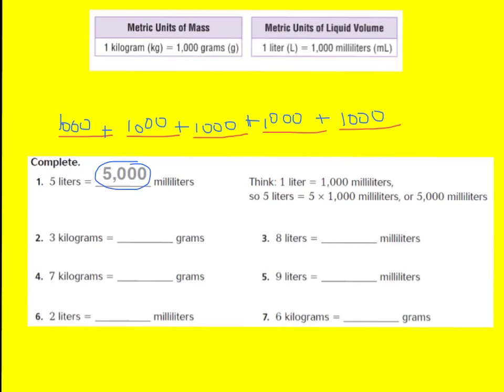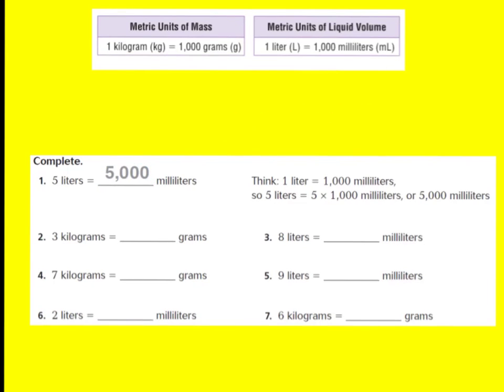So let's look at question two. Three kilograms equals how many grams? So I'm going to go ahead and draw three lines. Each line will represent one kilogram. And I'm going to put on each line the value of how many grams are in a kilogram. One kilogram has 1,000 grams, another kilogram has 1,000 grams, and a third kilogram has 1,000 grams. And so if I were to add up all of my kilograms, they would equal 3,000 grams. Therefore, for number two, 3 kilograms equals 3,000 grams.